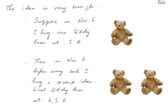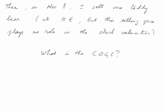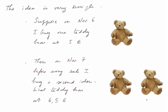The idea is very simple. Suppose that on November the 6th, I buy one teddy bear at 5 euros — that's the purchasing price and this teddy bear goes into my stock. Then before any sale, I buy another teddy bear on November the 7th — a second identical teddy bear to the first one, but that one I purchased at 6.5 euros. The purchasing price of teddy bears, like anything else, varies over time. Then on November the 8th, I sell one teddy bear at 10 euros, but this selling price plays no role in the stock valuation. The question is: what is the cost of goods sold? I sold one of these teddy bears — what was its cost?